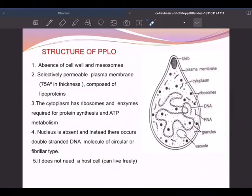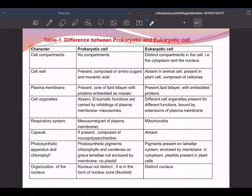I want you to focus on this DNA and RNA. How do you differentiate prokaryotic cell and eukaryotic cell? Go through the table. Cell components: no compartments, distinct. Cell wall: present in prokaryotic, absent in animal cell, present in plant cell. Plasma membrane: present, lipid layer. You've got proteins plus lipids. Cell organelles: absent here, present. Respiratory system: mesosomes, mitochondria will be there, well-developed. Cell capsule: present, composed of polysaccharides here, absent. Capsule is absent. Photosynthetic pigments: chlorophyll will be present, carotene will be there. Here, lamellar system. You've got what is called plastids, well-developed plastids. Nucleus is not distinct. Nucleus is distinct.